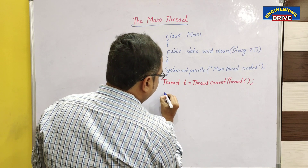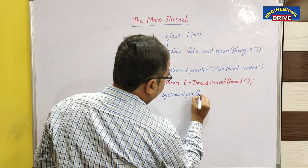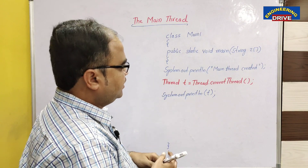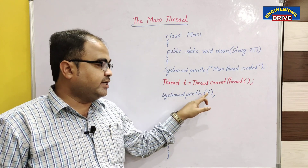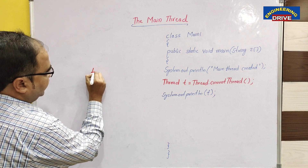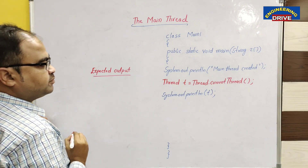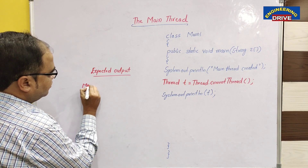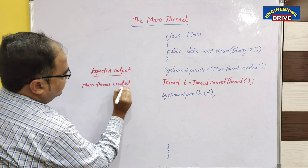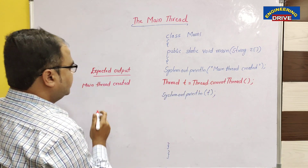Next, I want to display this information as output, so I use System.out.println(t) to display the details of the object t. The object t contains the information about the main thread. When we compile and execute this Java program, we will get the expected output. The first line will be 'main thread created', and then we display the object t.